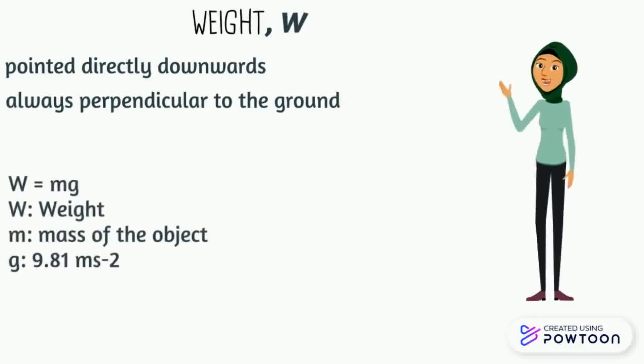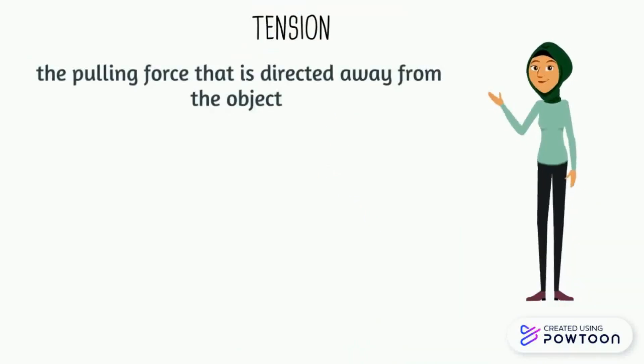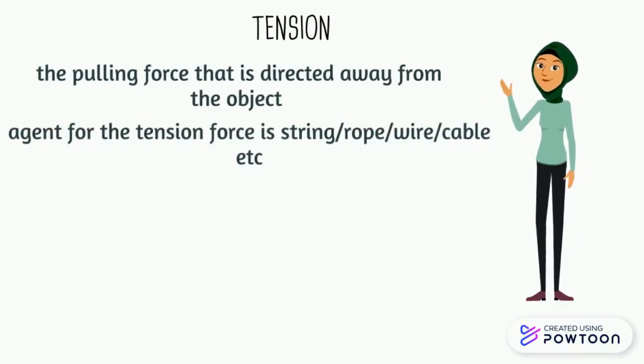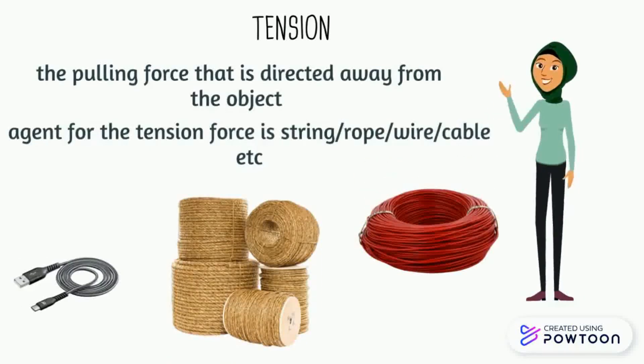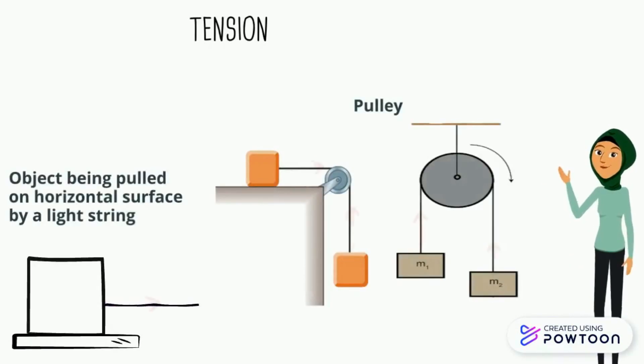Secondly is the tension. It is a pulling force directed away from the object and attempts to stretch or elongate the object. The agent for this force is string, rope, wire, or cable. The tensional force is always drawn from the surface of the object and directed away from it with the symbol capital T.